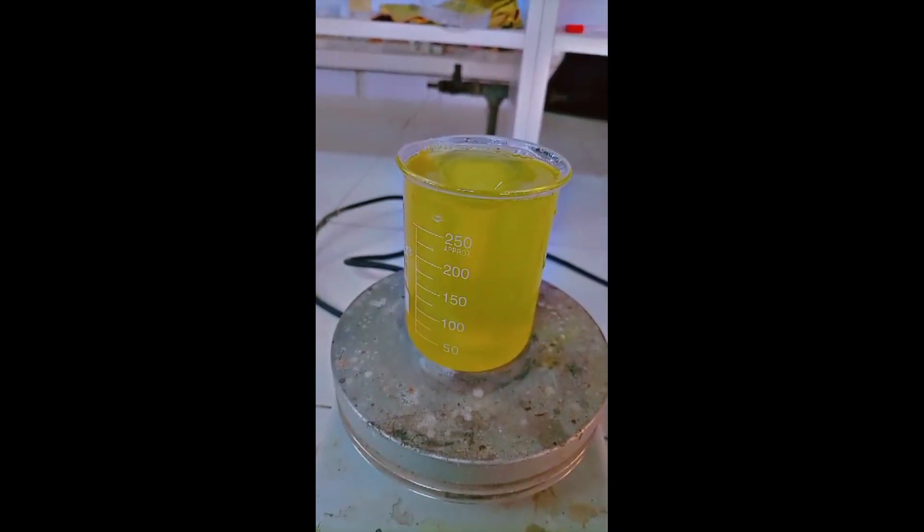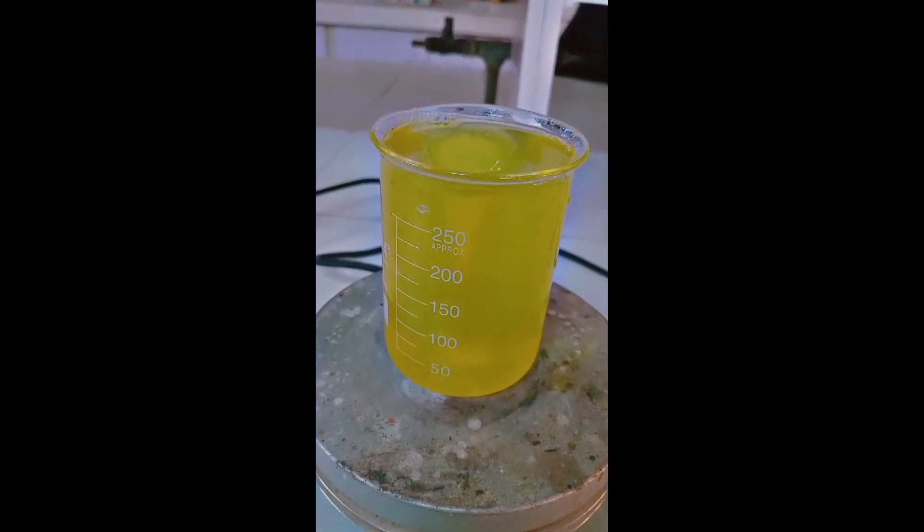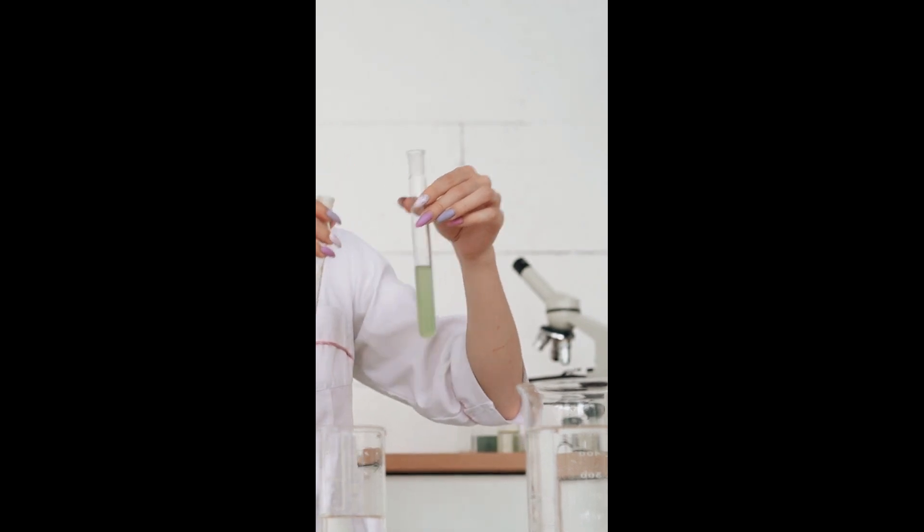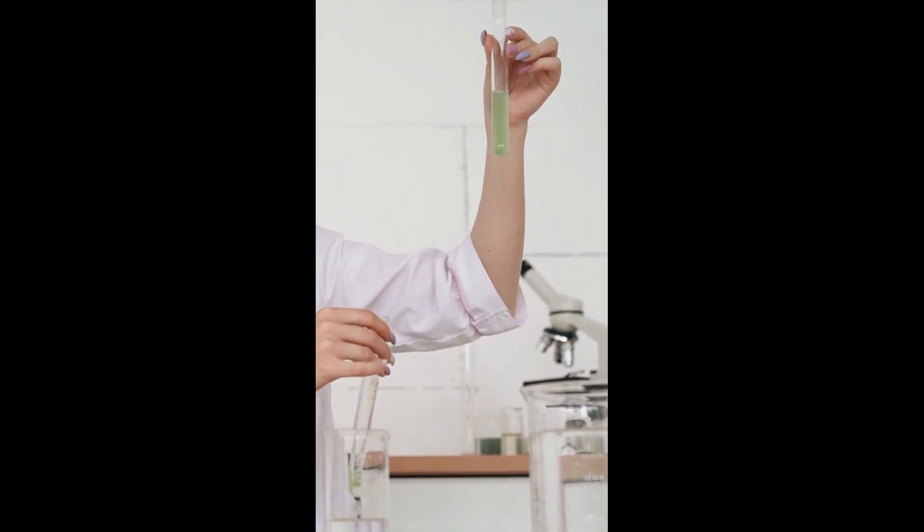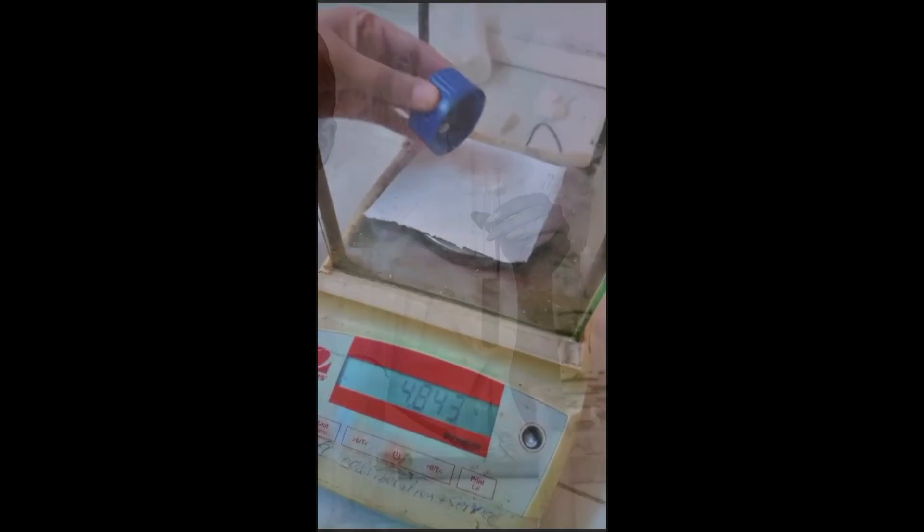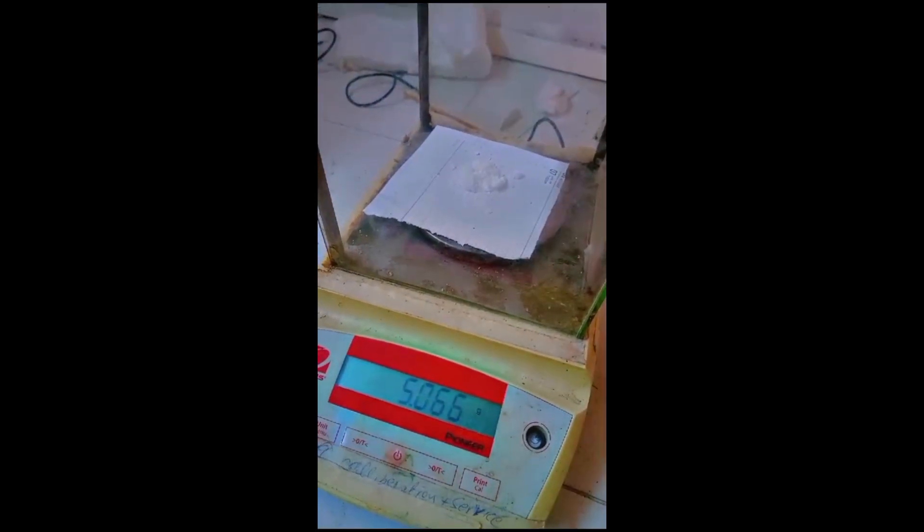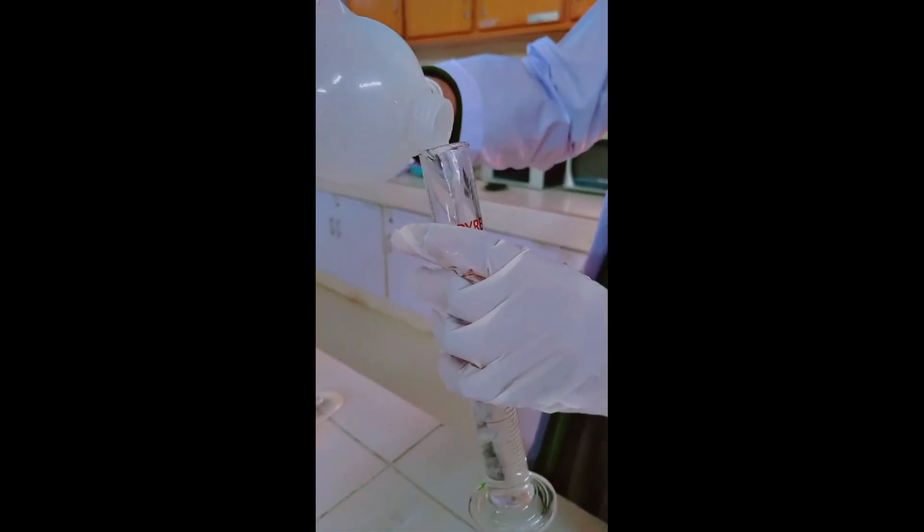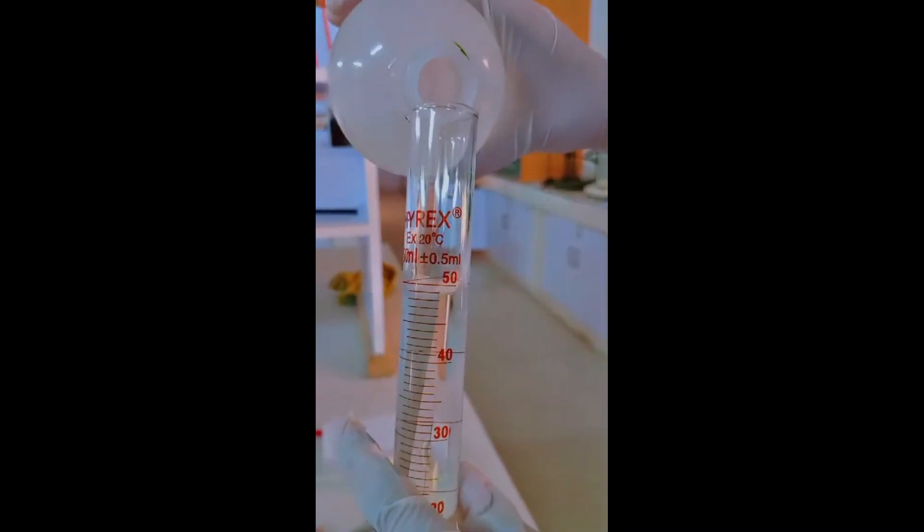In the next step, we will prepare the zinc nitrate solution that acts as the main source of zinc. Take 5 grams of zinc nitrate in a separate 100 ml beaker and add 25 ml of distilled water. Make sure the ratio of zinc nitrate to water is 1:5 (5 grams of zinc nitrate to 25 ml of distilled water). Stir the solution using a glass rod until the zinc nitrate is completely dissolved.